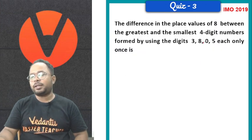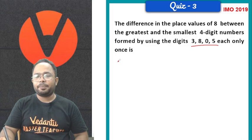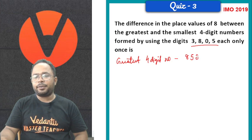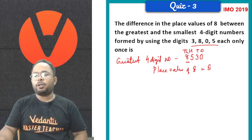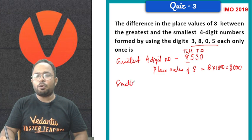If we want to make a 4 digit number out of these digits, we will get the greatest 4 digit number 8, 5, 3, 0. Place value of 8, as we know 1's place, this is 10's place, 100's place and this is 1000's place. So, place value of 8 is going to be 8 into 1000, that is 8000.